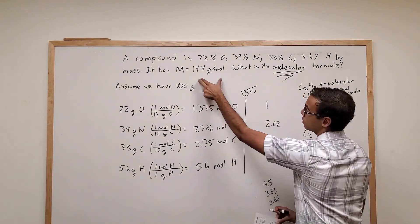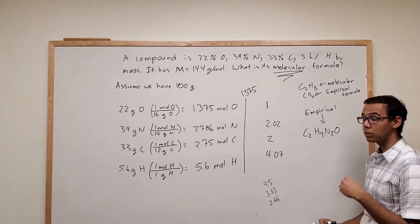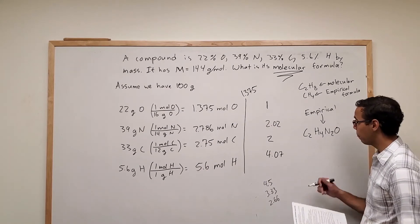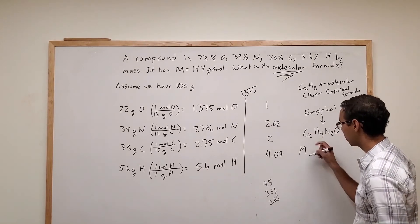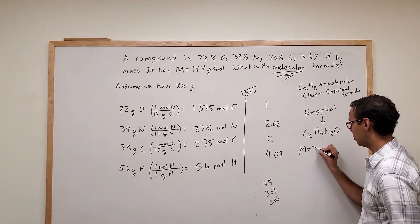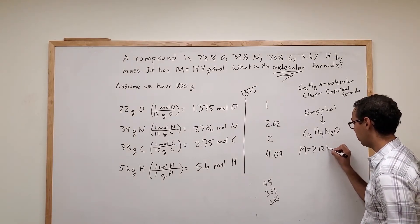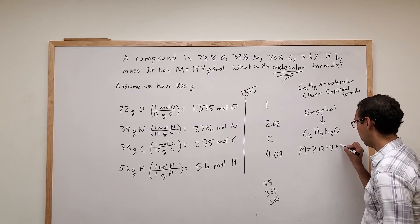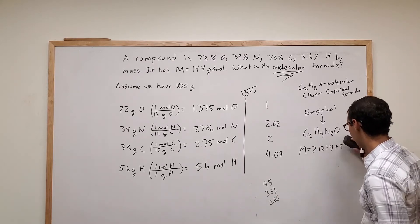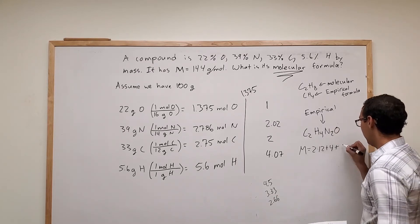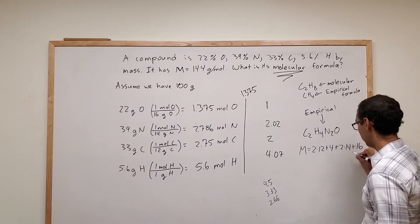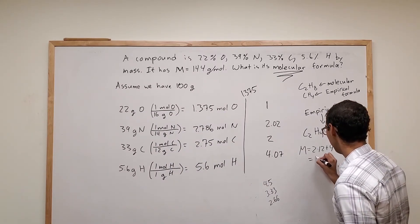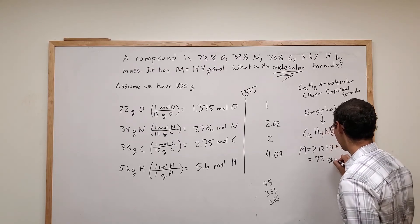But we also have a molar mass, which is 144 grams per mole. So this is going to help us find our molecular formula. So we look here. If we find the molar mass of this compound, we see that we're going to have two times 12 for carbon, plus four from hydrogen, plus two times 14 from nitrogen, plus 16 from oxygen. When you add that all up, you find 72 grams per mole.